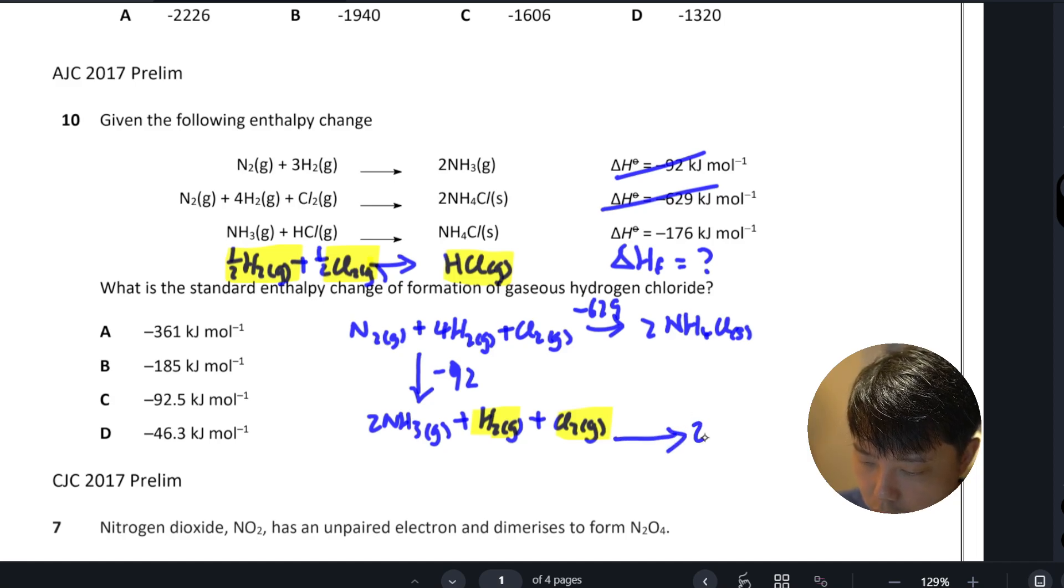So the ammonia will just bring it over plus two HCl gas. Okay, so this will be delta H formation two times, okay, of HCl.